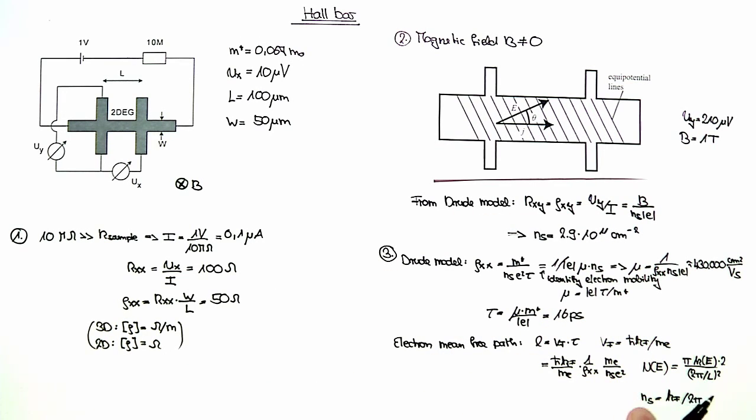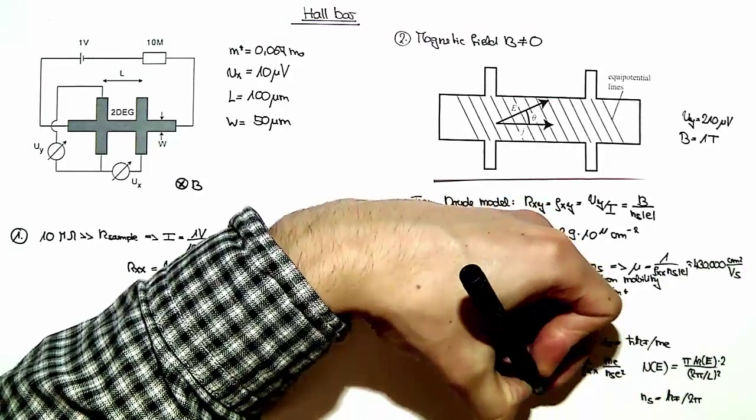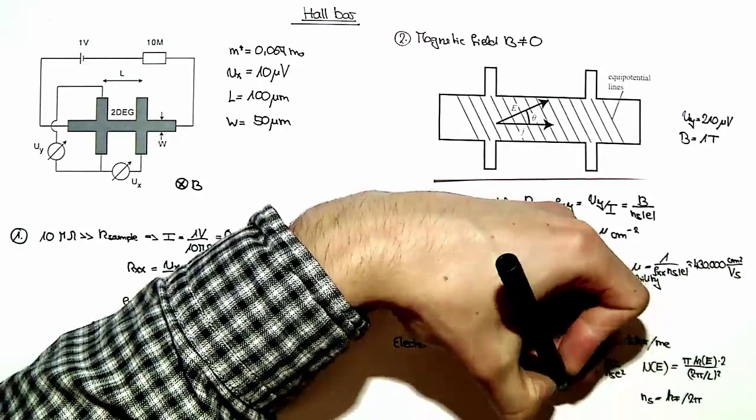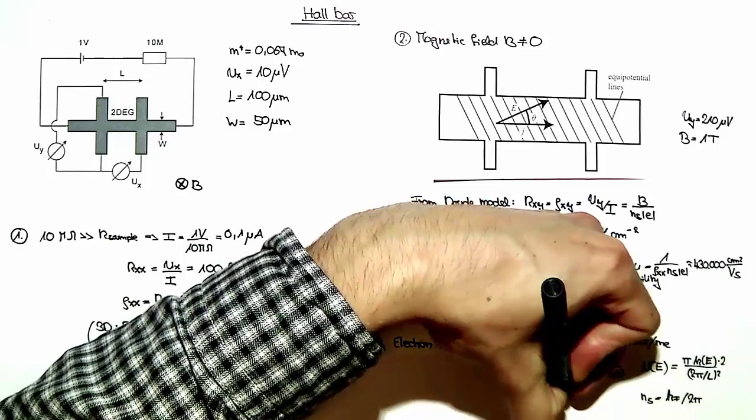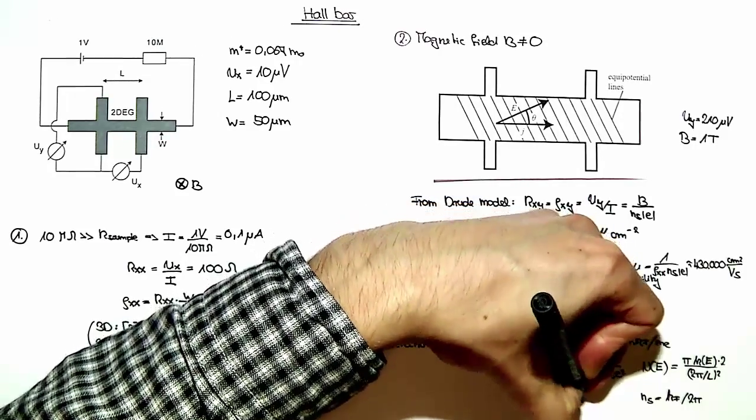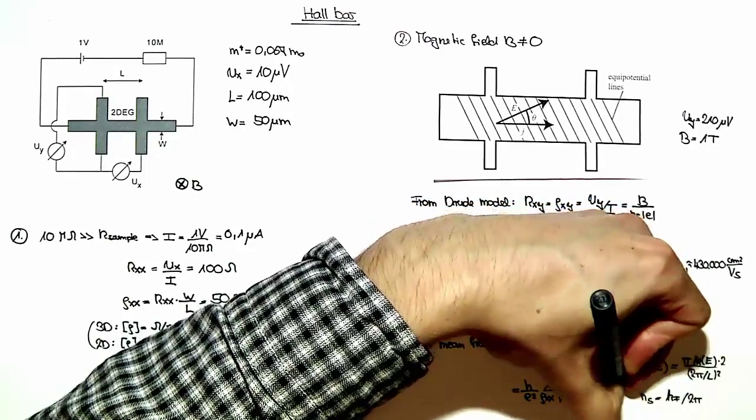One just divides this N of E over the area, giving the density at the Fermi energy. We can now plug this in to our equation for the electron mean free path such that we obtain h over E squared, 1 over rho_xx, 1 over square root 2 pi times Ns. And this is about 3.8 micron.